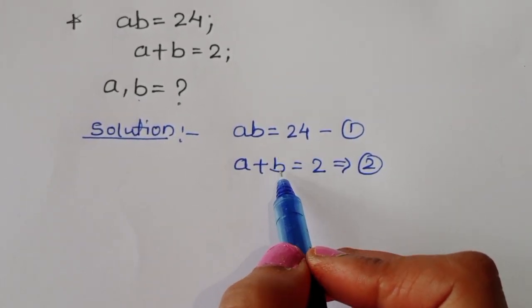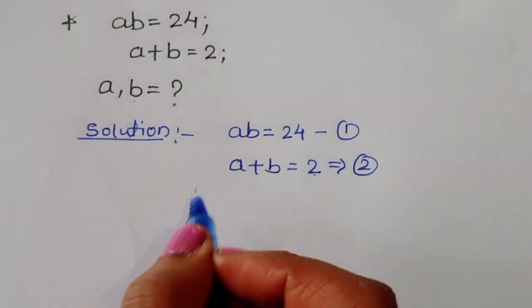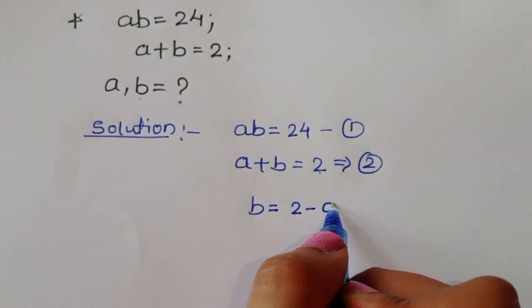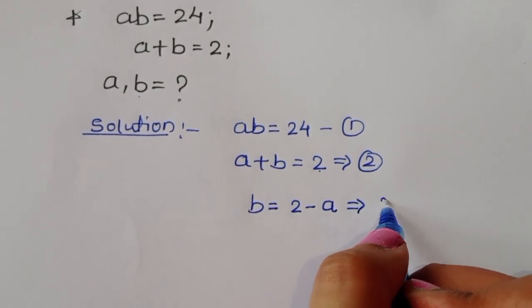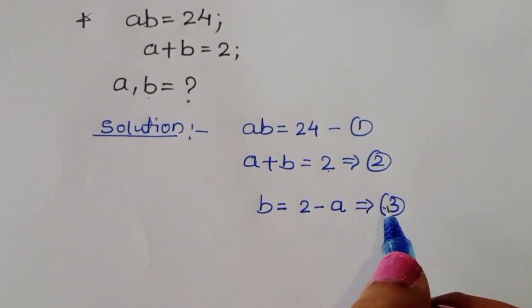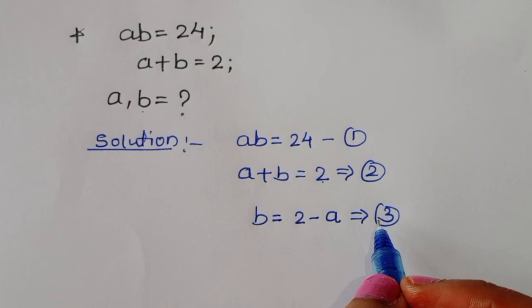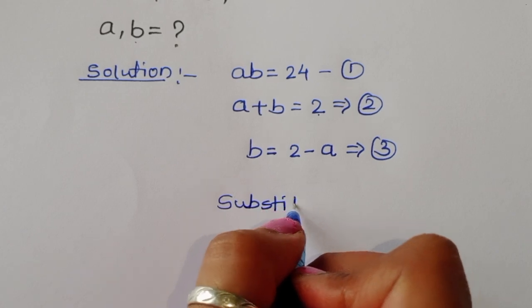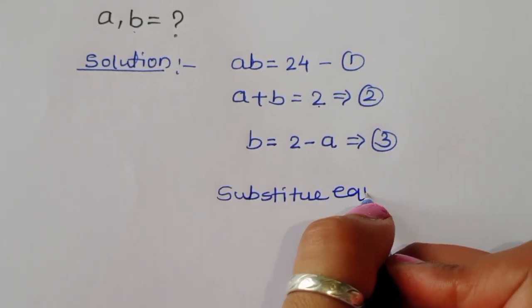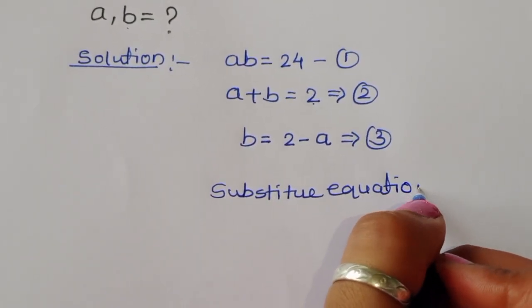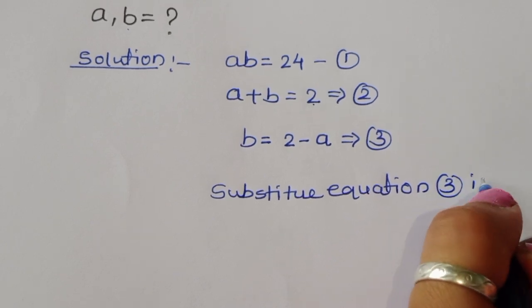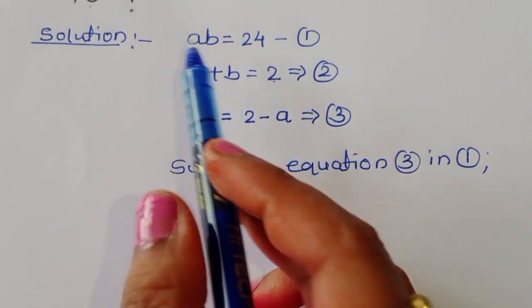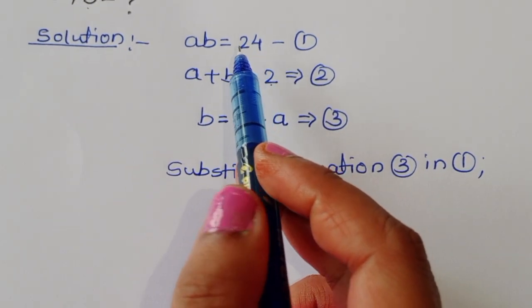From equation 2, the value of b is equal to 2 minus a. This is equation number 3. Now we have to substitute equation 3 into equation 1.